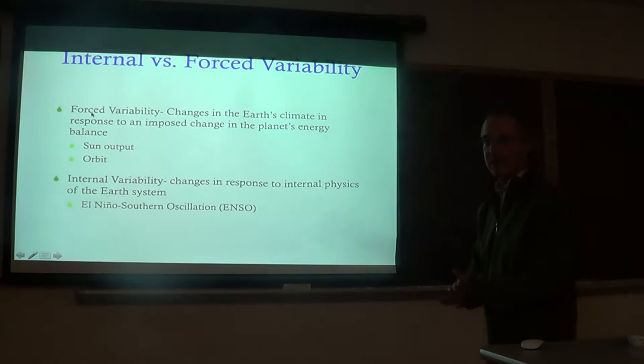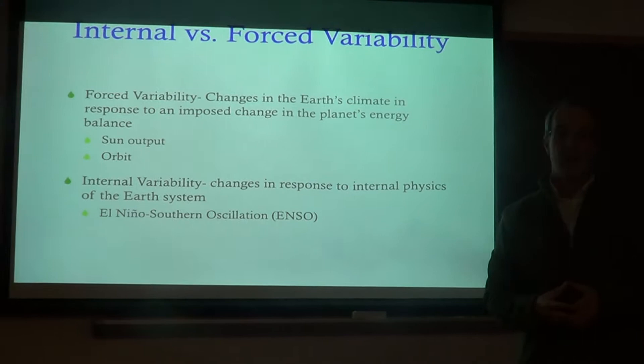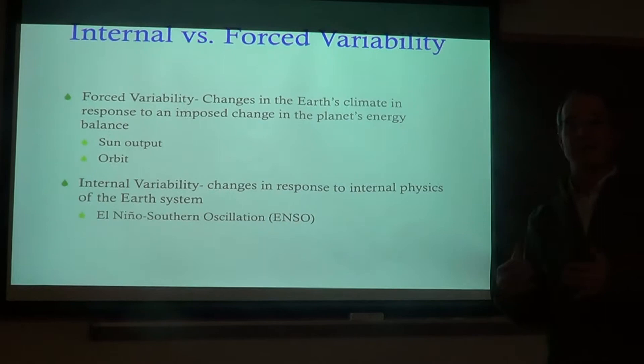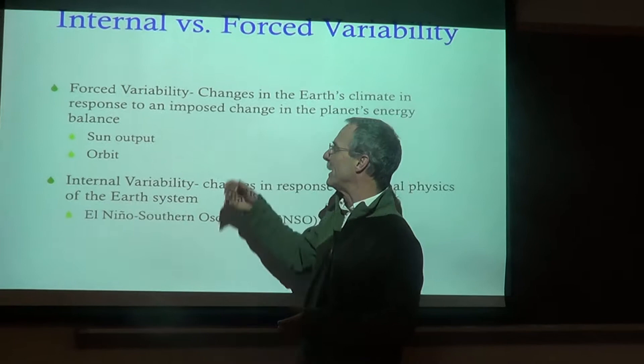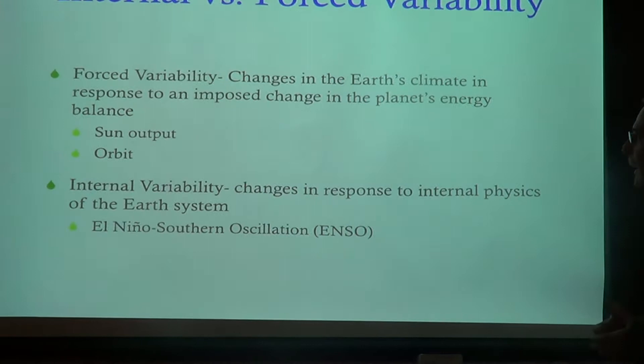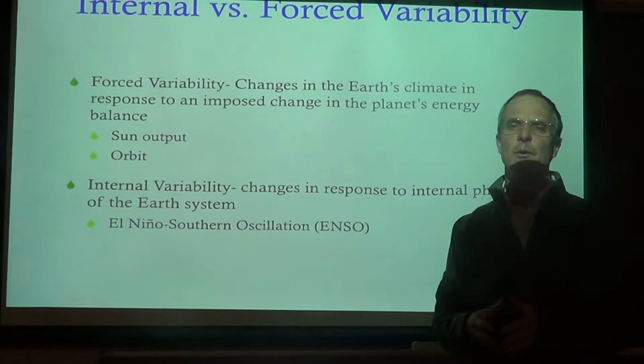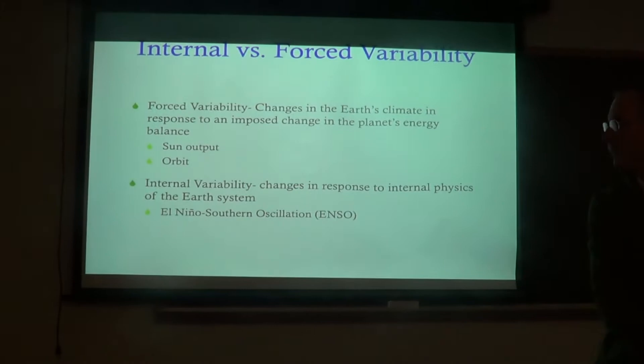El Niño and La Niña are an example of internal variability in the climate system. Eventually when we talk about greenhouse gases and things like that, those are external influences on the climate. But things like El Niño and La Niña are natural variations within the climate system. Things that are forced might be greenhouse gases, or the sun's output, or when we talk about ice ages, the earth's orbit. These things that are internal have to do with the physics of the ocean and the climate system itself.